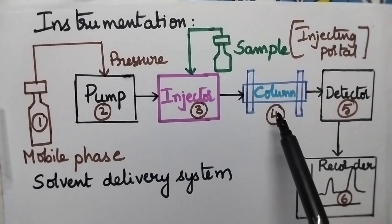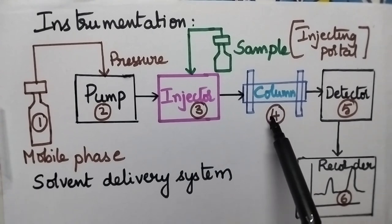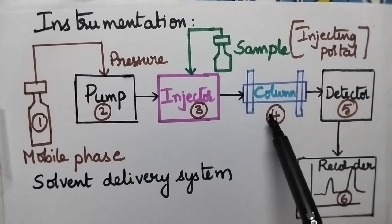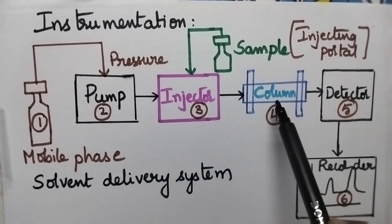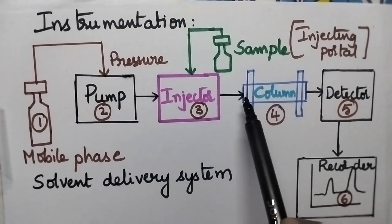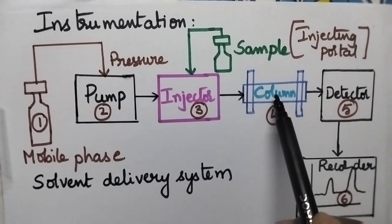The column is highly useful for the separation of components since different components will have different flow rates under the influence of both mobile phase and stationary phase.